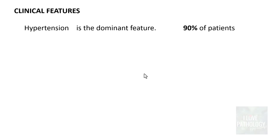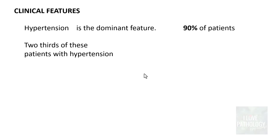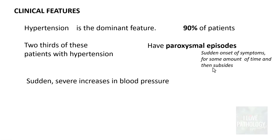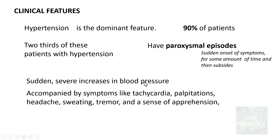The dominant clinical feature of pheochromocytoma is hypertension — present in 90% of cases. Two-thirds of these patients have paroxysmal episodes: sudden-onset symptoms including severe increase in blood pressure accompanied by tachycardia, palpitations, headache, sweating, tremor and a sense of apprehension.